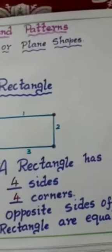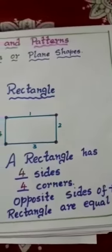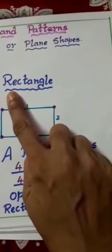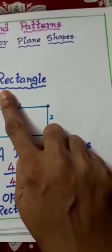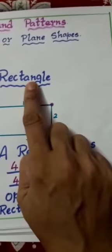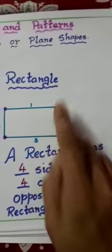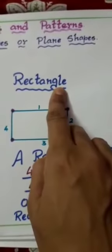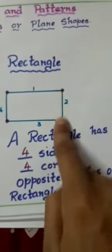Next, we will learn about rectangle. Let us learn the spelling of rectangle. Rect: R-E-C-T. Angle: A-N-G-L-E. Rectangle.